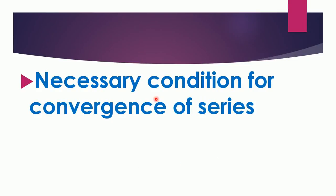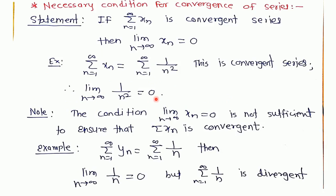Hi, in this video I am going to explain the necessary condition for convergence of a series. Statement: If the sum of Xn is a convergent series, then the limit as n tends to infinity of the nth term of the series is equal to 0. That is, for every convergent series, the limit of the nth term of the series is equal to 0.